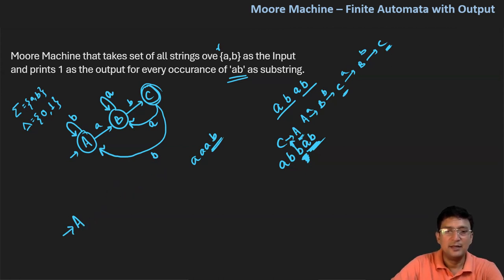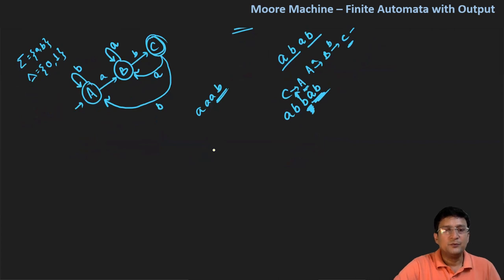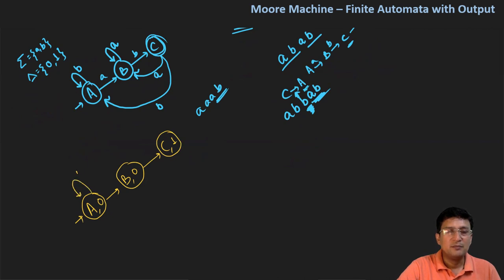I have once again defined what we have done here. If I am at the state A, I did not get the AB, so I will print zero. If I am at state B, then also I did not get the AB, so let's print zero. But if I am at state number C, then certainly I have got AB, so let's print 1. Fine, rest of the automata remains the same, except that we will not make the final state yet because there is no final state in the Moore or the Mealy machine. So this is the Moore machine for the given question.